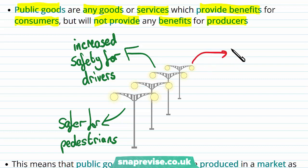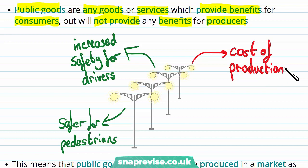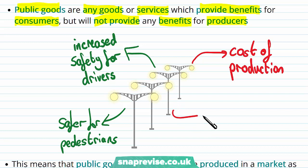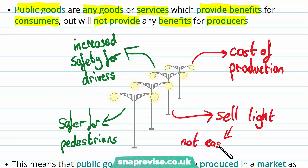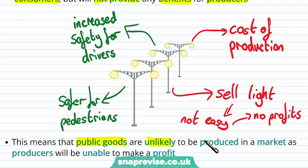Instead, in the provision of street lighting, firms deal with the costs of production. It's quite difficult to sell light to consumers — the benefits a producer gains from production typically come from revenue or profit, but it's not easy for a provider of street lighting to sell light to the public. Therefore, there are no profits made. This means public goods are unlikely to be produced in a market, as producers will be unable to make profits — a further reason why we have a case for complete market failure.